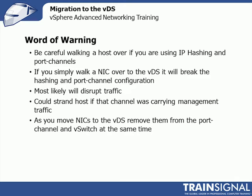You might get lucky and win the lottery of hashing to a NIC and things continue to work for the migration, but odds are you're going to have a problem. What I recommend is: if you're about to migrate from vSwitch to VDS and you're using port channels and IP hashing, change the vSphere host first and then change the physical switch. That matters a lot if they're carrying the VM kernel interface. If you break the port channel first, you may not be able to talk to the host anymore to make that other change.